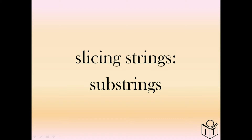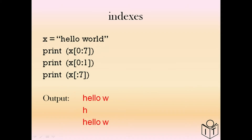We can use indexing to take parts of substrings — this is called slicing. X[0:7] gives 'hello W', so the output is 'hello W'. X[0:1] is just the first character. And if we start at the beginning, we don't need to put the 0 — so we just use colon then number. In this example we just have the colon and 7, which brings us up to character 7: 'hello W'.